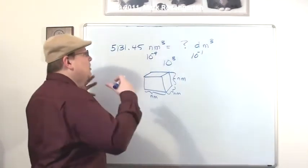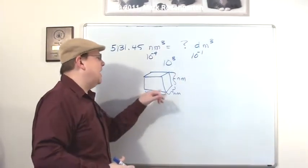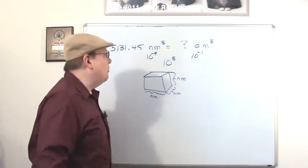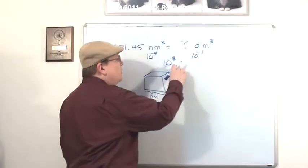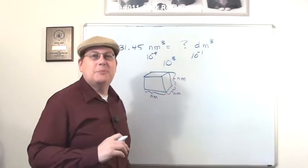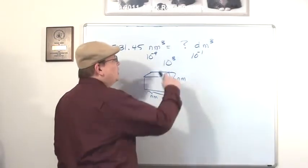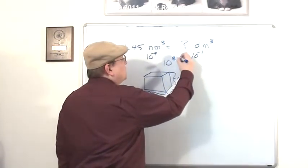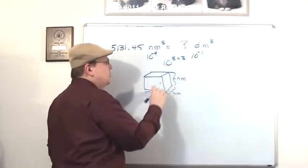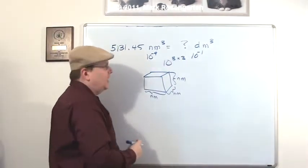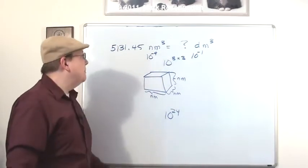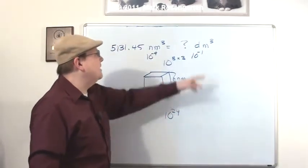But we have to cube that, because we have three dimensions. Nanometers, nanometers, and nanometers. Now when we cube this, because when you multiply numbers with exponents together, you add the exponents together. So in order to cube this, what we need to do is multiply the exponent by three. Difference is 10 to the eighth times the three dimensions that we're working in. This comes out to a 10 to the 24th difference between cubic nanometers and cubic decimeters.